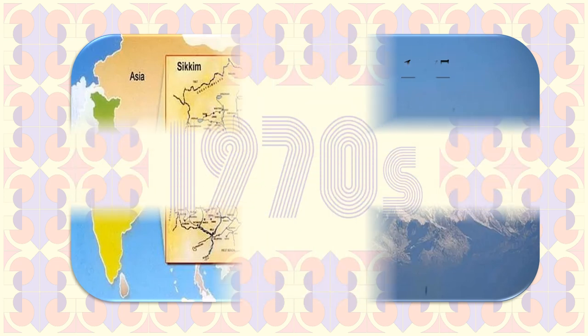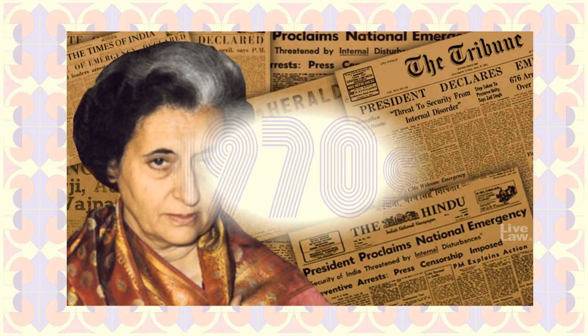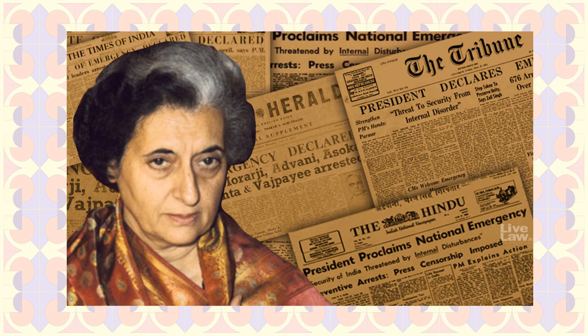It is widely believed that the Allahabad High Court's decision, which came on June 12, 1975, led to the imposition of the emergency. On 26th June 1975, the then Prime Minister Indira Gandhi took to the radio to announce that the President had proclaimed the emergency. The then President, Fakruddin Ali Ahmed, at the behest of Indira Gandhi, declared the emergency on 25th June 1975 under Article 352 of the Constitution.